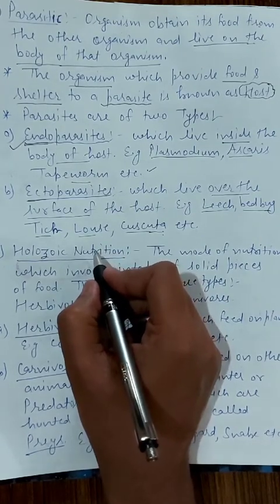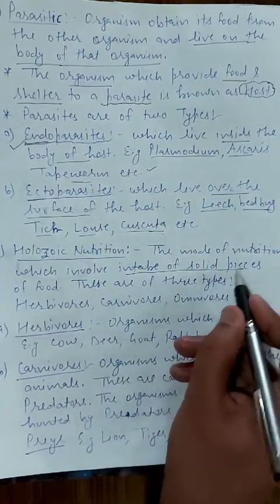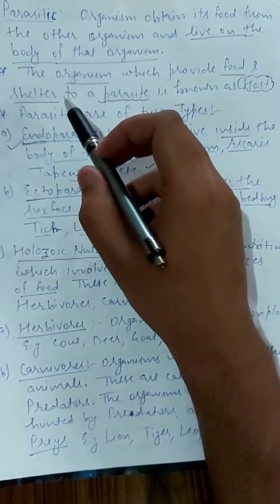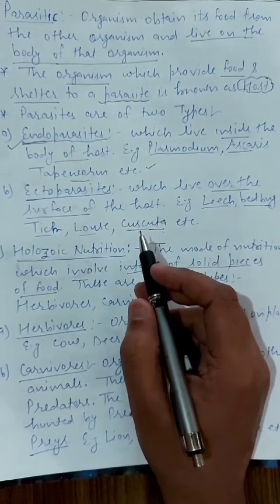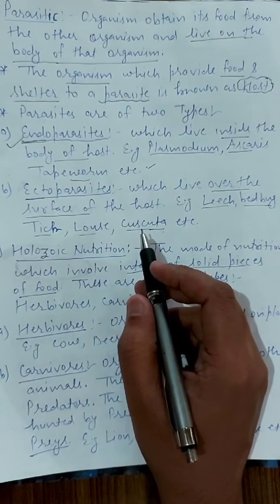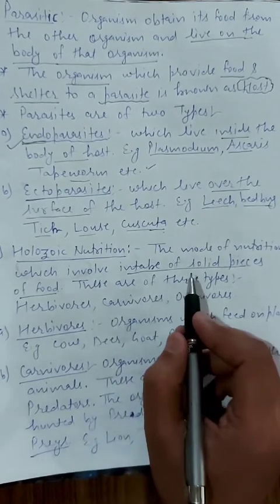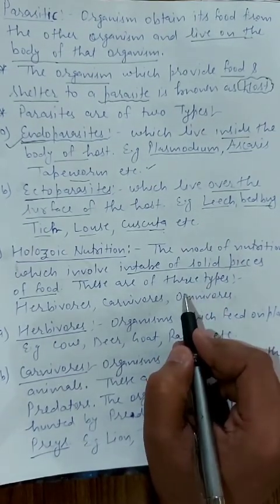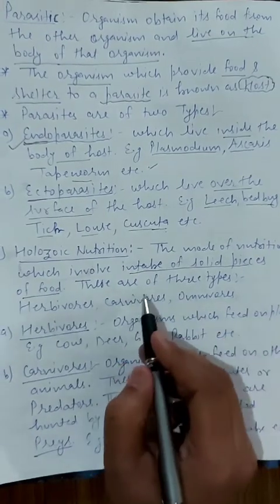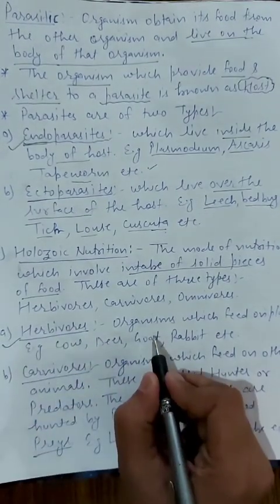The third type of heterotrophic mode of nutrition is holozoic nutrition. This is the mode of nutrition which involves intake of solid pieces of food, which is then internally digested and absorbed. Unlike the previous two modes, in holozoic nutrition the organism takes in solid food, digests it, and absorbs the digested food.